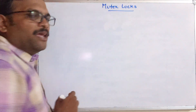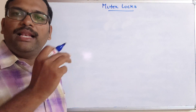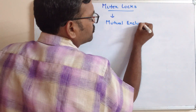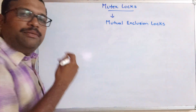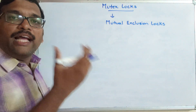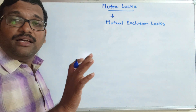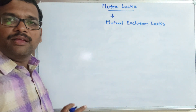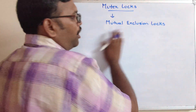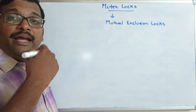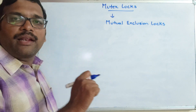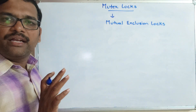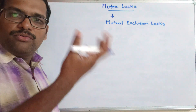Mutex locks — the name itself indicates that mutex means mutual exclusion locks. Mutual exclusion means only one process is allowed to access the shared resource. If one process is utilizing this resource, then other processes have to wait until that process finishes its execution. With mutex locks, there will be one lock — if one process enters into the critical section, a lock will be required, and until the lock is released, no other process is allowed to enter into the critical section.